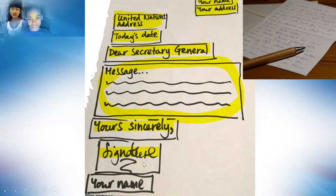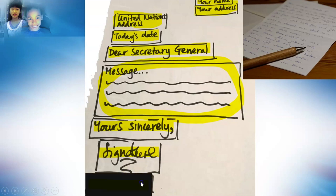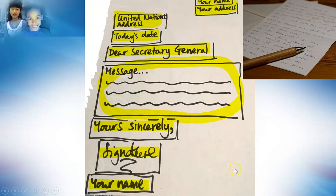Sometimes if you sign your signature, it's difficult to read. So underneath that, you're going to write your name so it's easy to read. This is the outline of a letter.